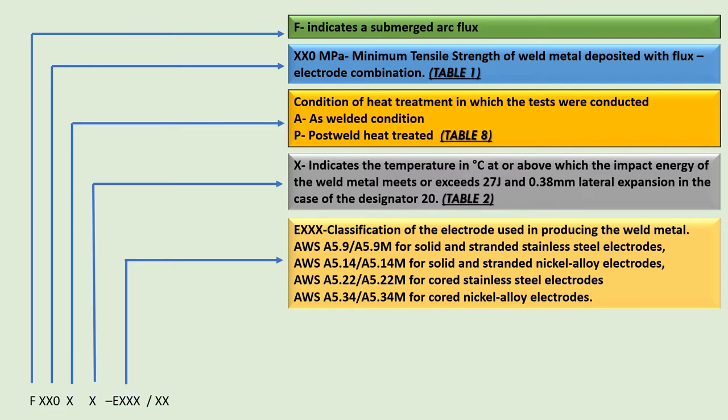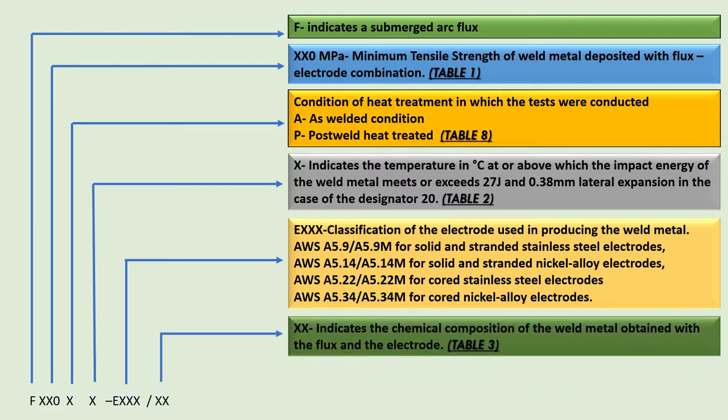After this, we have a designator starting with E, followed by details about the classification of the electrode used in producing the weld metal. These designators are from the AWS classifications SFA 5.9, SFA 5.14, SFA 5.22, and SFA 5.34. After this, we have a numeric designator which indicates the chemical composition of the weld metal obtained with the combination of the flux and electrode. These chemical composition details are given in Table 3 of SFA 5.39.